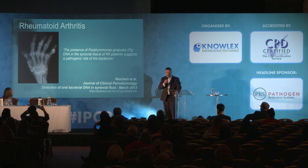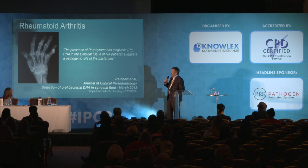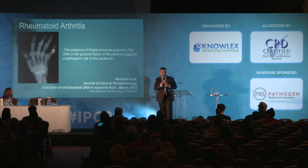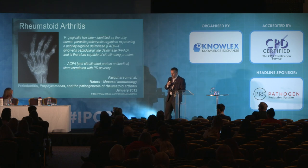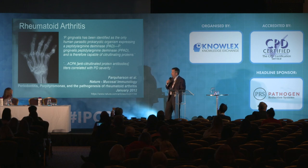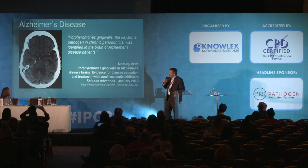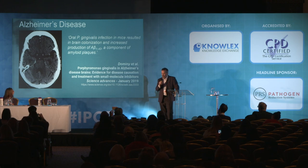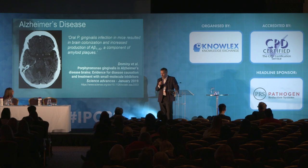In rheumatoid arthritis, the bacteria Porphyromonas gingivalis — the primary pathogen for gum disease — has its DNA found in the inflamed synovium of people with rheumatoid arthritis, and it's implicated in autoantibody production in rheumatoid. The same bacteria is found in the brain of people with Alzheimer's disease, and has been shown to play an important role in the production of amyloid plaque — the known pathological cause of Alzheimer's. And the list goes on and on.